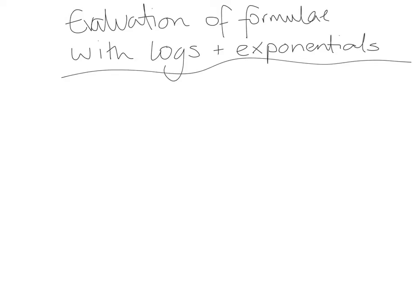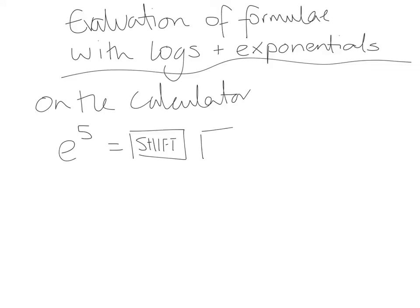So on the calculator, if we wanted e to the power of 5, we would press our shift button, followed by the ln button, which is the natural log, and then 5 because that's our power. When we press equals we get 148.413.